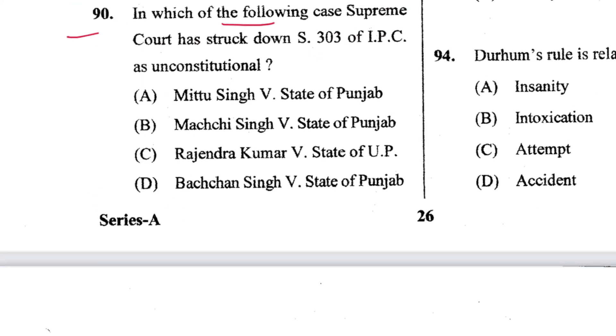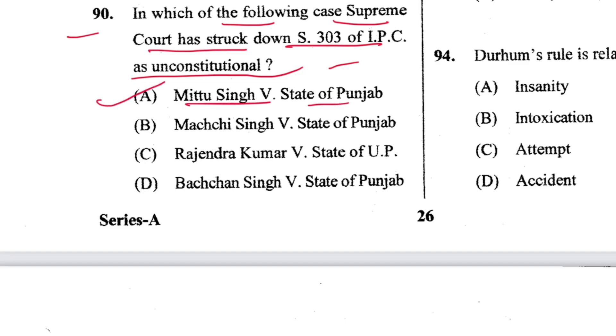Question 90: In which case did the Supreme Court strike down Section 303 of IPC as unconstitutional? That is Mithu Singh vs. State of Punjab. A is the answer.